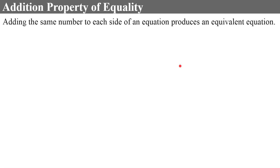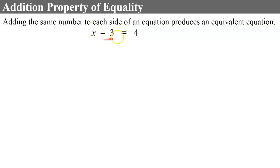First, we're going to review what the addition property of equality is. It states that adding the same number to each side of an equation produces an equivalent equation. Here's an example: I have the equation x subtract 3 equals 4. To solve this equation, I need to isolate x — get x all by itself. So I have to undo this subtract 3. To undo that, I want to add 3 to each side. Using the addition property of equality, what I do to one side of the equation, I must also do to the other side.